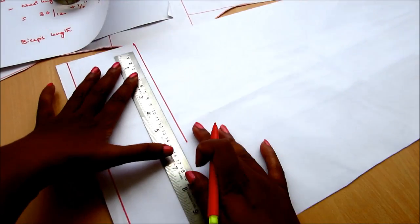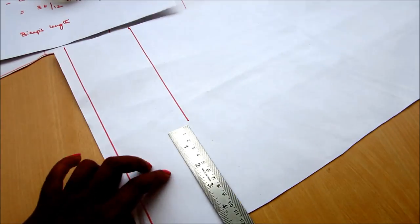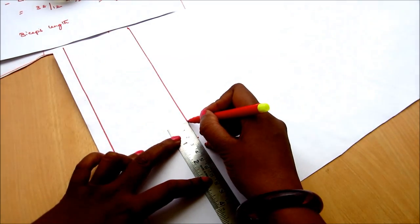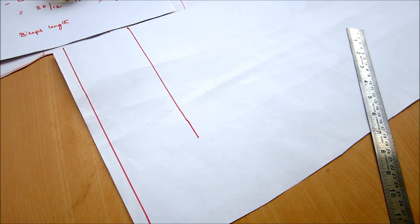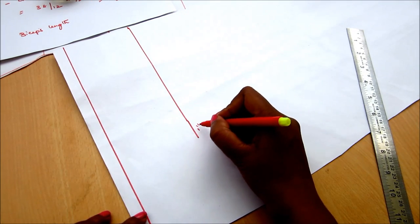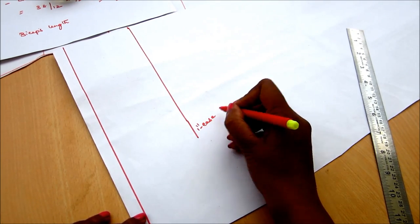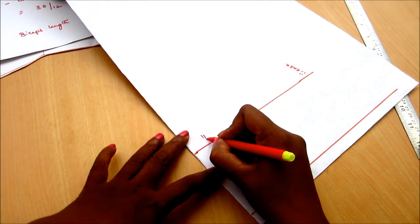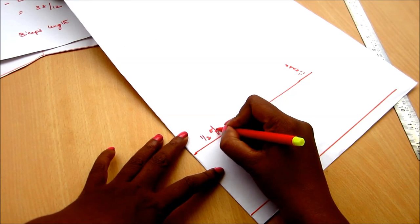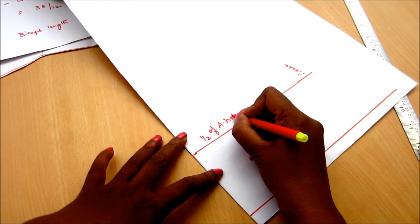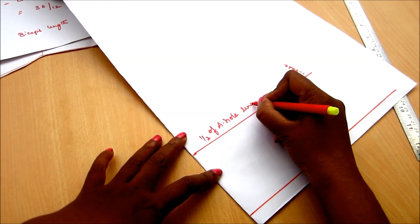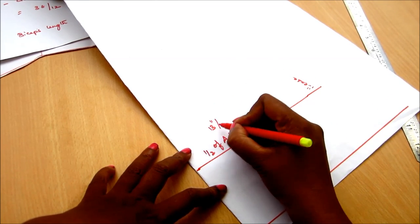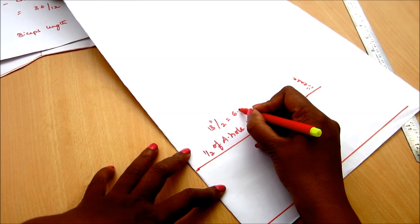And also add the ease length. Normally I'll take one inch so that one inch I'll be adding here. This how much ease you will add towards the armpit or the sides, that length you have to add here. So on this line you have to take your half of your armhole length measurements.